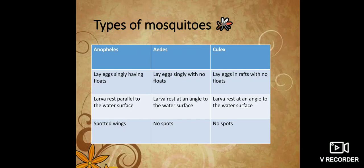When it becomes adult, Anopheles mosquitoes have spotted wings, but Aedes and Culex don't have spots on their body or wings. By identifying these differences, we can identify the types of mosquitoes.